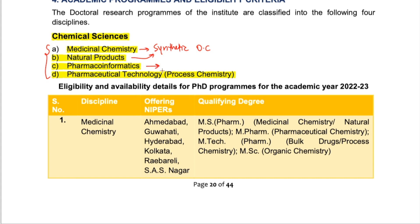Regarding pharmacoinformatics, this is more of computational medicinal chemistry — computational drug designing. You study different software and computational methods. Pharmacoinformatics involves computational studies of a drug molecule before going into the synthetic part, helping you understand which type of molecule will be more active. It's computational study of biological systems in medicinal and drug discovery.